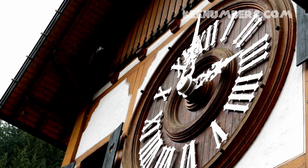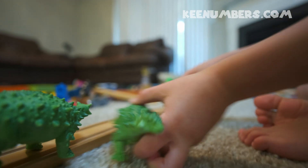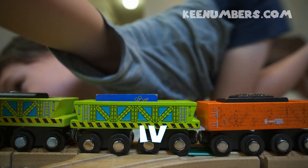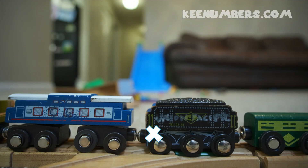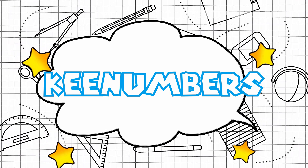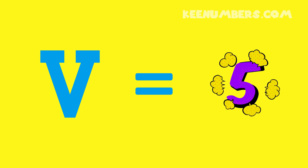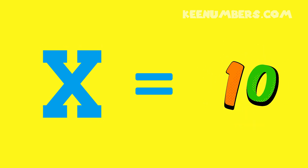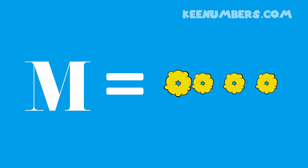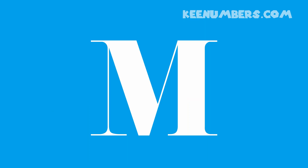Let's recap: I means one, V means five, X means ten, L is fifty, C is a hundred, M is a thousand. Those are our Roman numerals. Roman numerals!